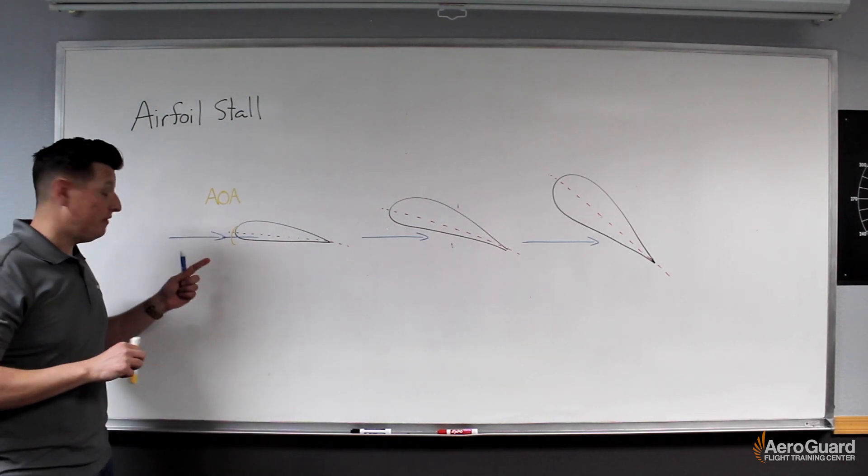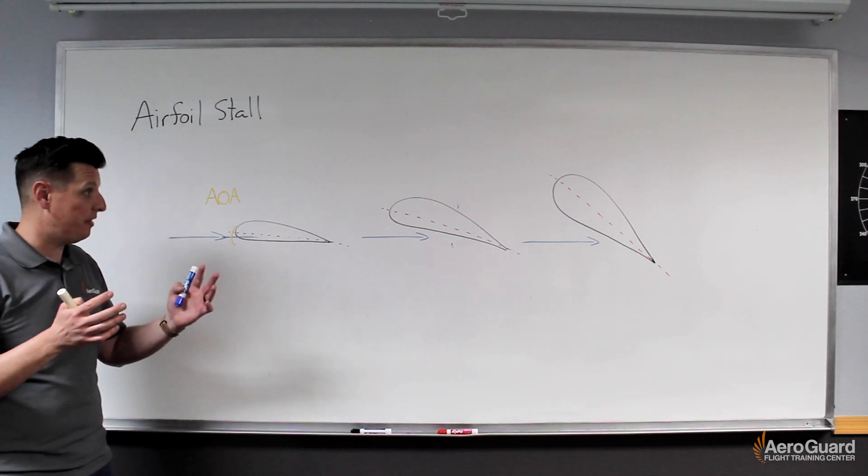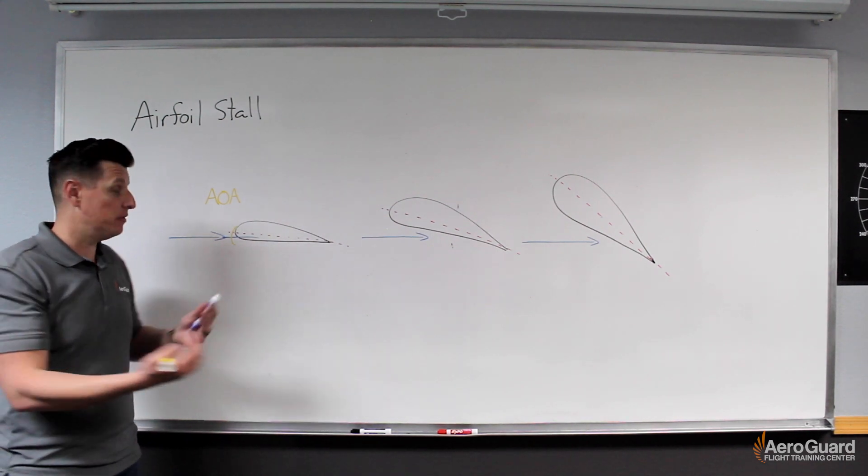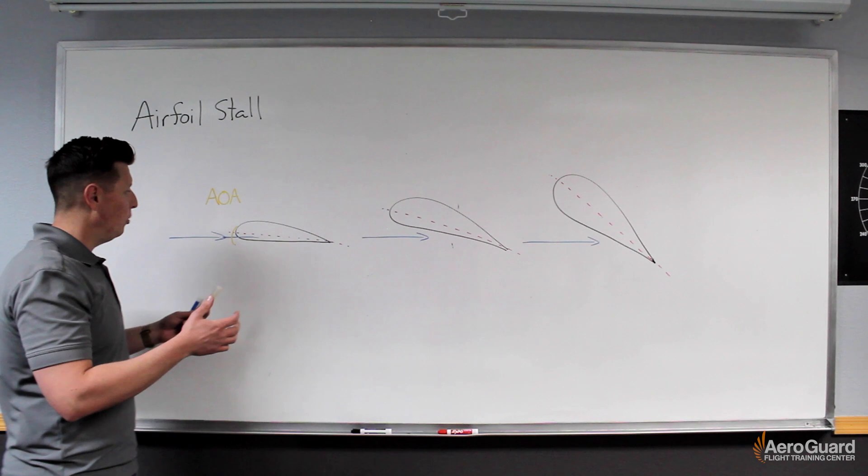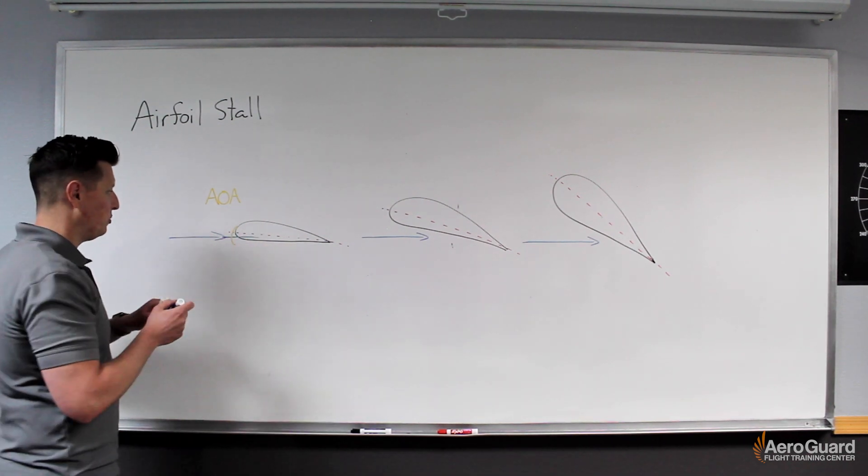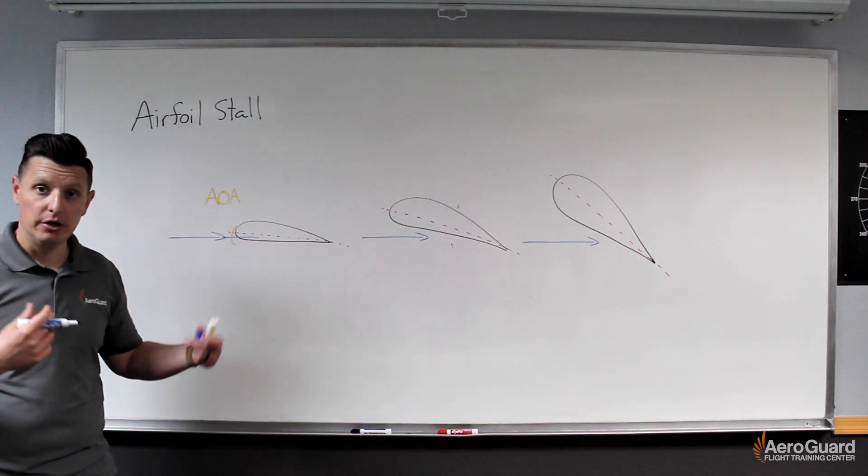So that angle of attack really drives one thing. We can associate the angle of attack with the pressure difference between the top and the bottom of the wing. If this angle continues to grow, what's going to change is how air flows over and under the wing.